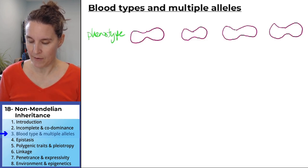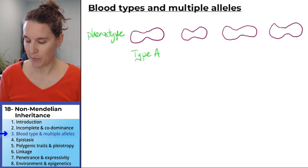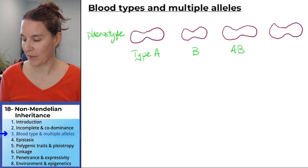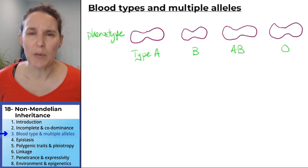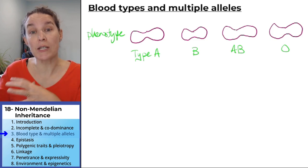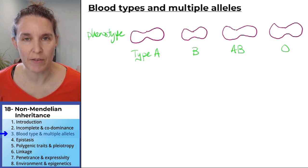We have type A blood. Type B, type AB, and type O. Does anybody know what the thing is that I'm missing that would increase the number of possible phenotypes we have here?